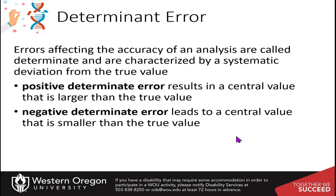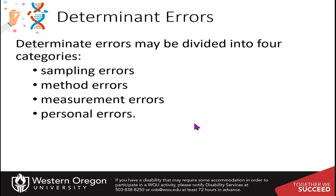Thinking about errors in more detail: a determinant error affects the accuracy of the analysis and is characterized by a systematic deviation from the true value. Positive determinant errors result in a central value larger than the true value; negative determinant errors lead to a central value smaller than the true value. Determinant errors are divided into four classes: sampling errors, method errors, measurement errors, and personal errors.